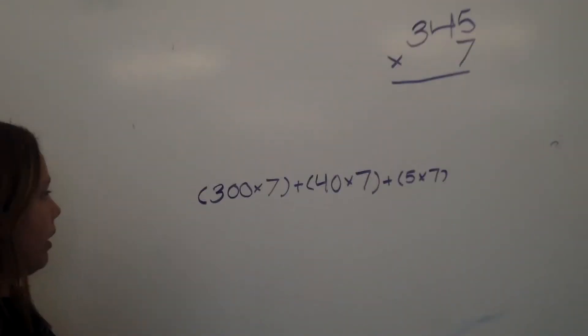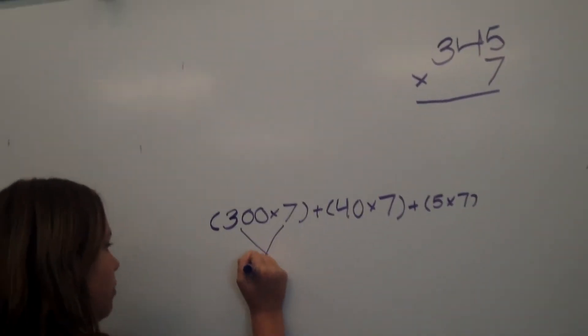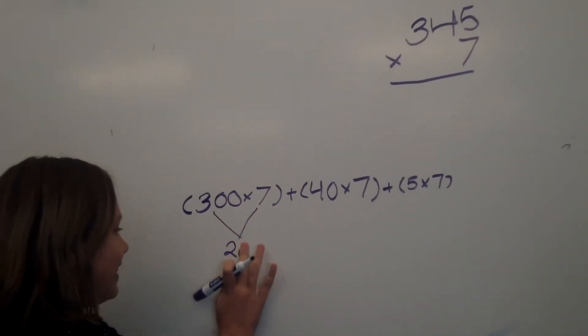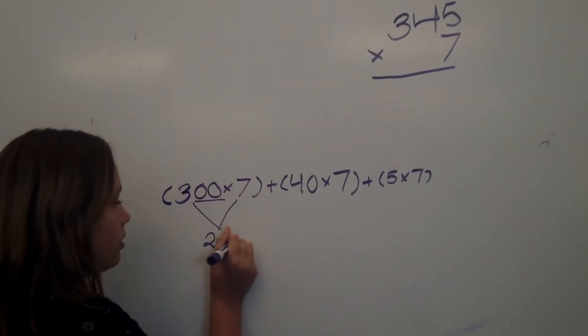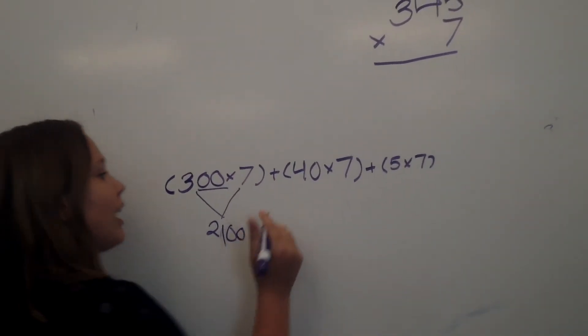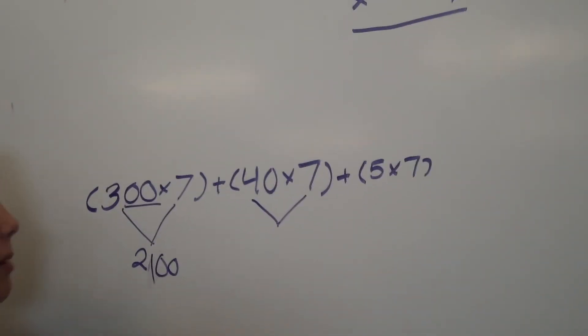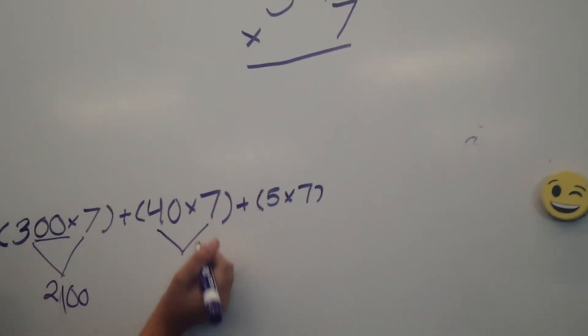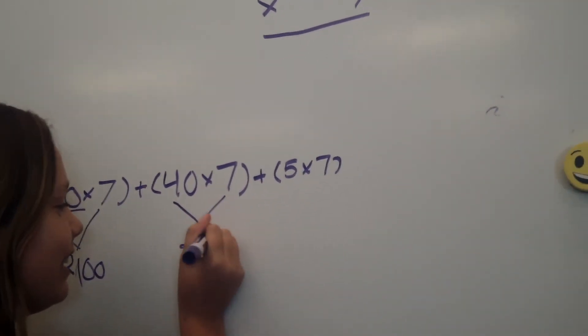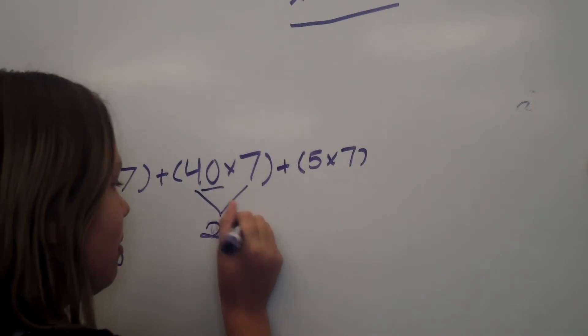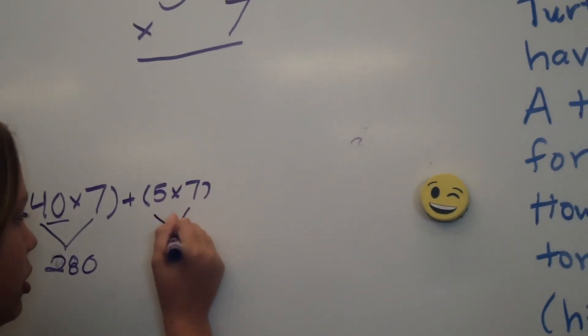Then you're going to think about what 3 times 7 is. 3 times 7 is 21, and you have to add the zeros, so it's 2,100. Then you have to think about what's 4 times 7. 4 times 7 is 28, and you can't forget about the zeros, so it's 280. And then you just have a basic math fact, which is 35.